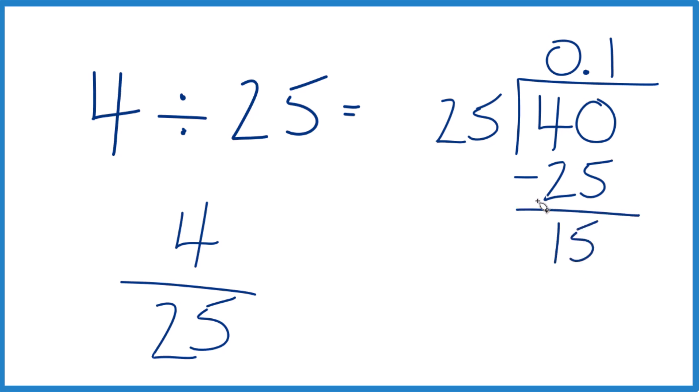And 25 doesn't go into 15, but we could call it 150 if we just moved over a decimal point. So 4 times 25 is 100, 5 times 25 is 125, and 6 times 25 would give us the 150 there.